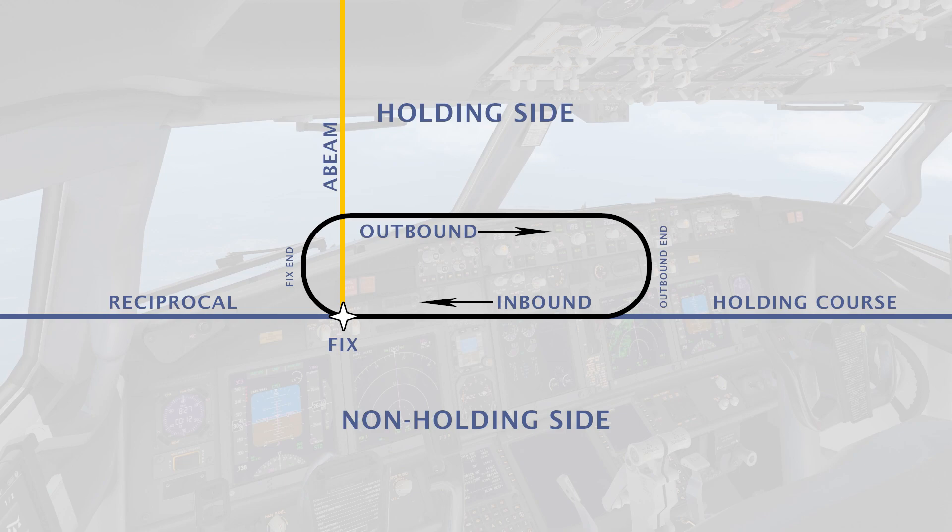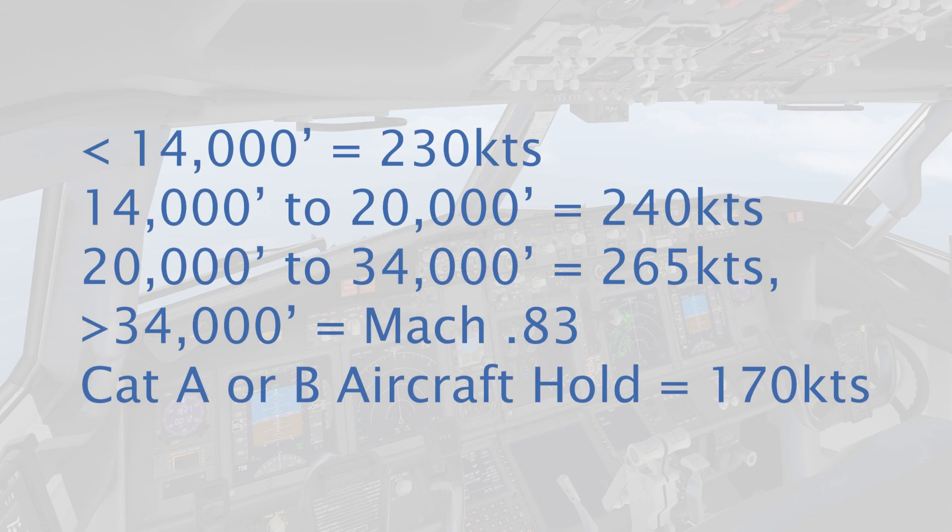Holding patterns have some general restrictions. If below 14,000 feet, aircraft will maintain 230 knots during the hold. Between 14,000 and 20,000 feet, aircraft will maintain 240 knots. Between 20,000 feet and 34,000 feet, aircraft will maintain 265 knots. Above 34,000 feet, aircraft will maintain Mach 0.83.